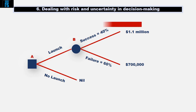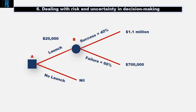We calculate decision trees from right to left, so the first node that we would assess is node B. At a chance node, we calculate expected value — in other words, 40% times $1.1 million plus 60% times negative $700,000, which equals $20,000 positive.